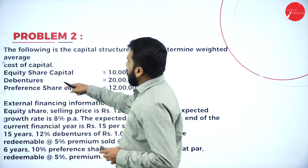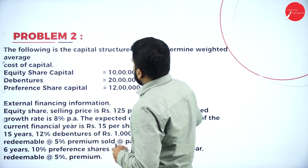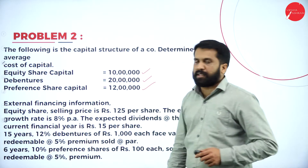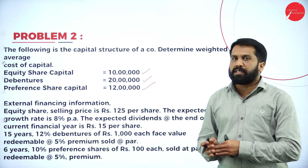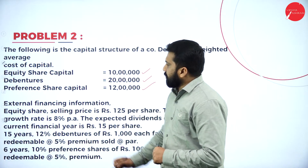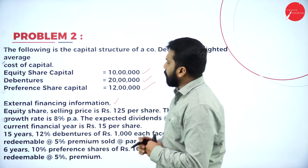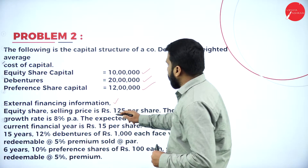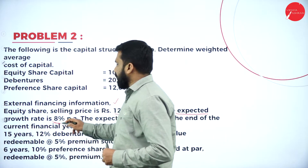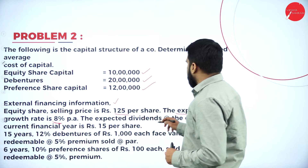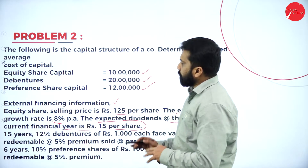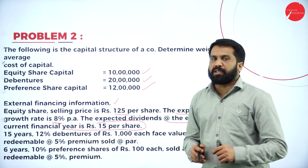We have equity shares of 10 lakh, debentures of 20 lakh, and preference shares of 12 lakh. You know how to do this because in the previous session we worked out this type of problem. Now, the external financial information: equity shares selling price is 125, expected growth rate is 8%, and the expected dividend at the end of the current financial year is 15 per share.